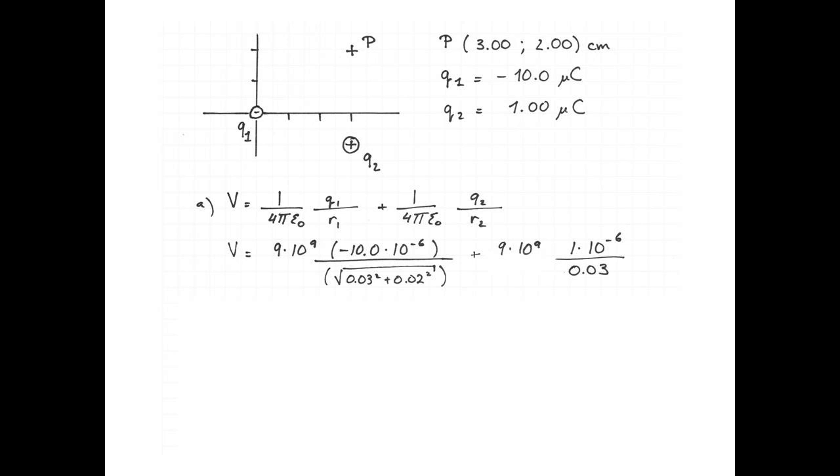1 over 4 pi epsilon naught is 9 times 10 to the 9. Q1 is negative 10 microcoulombs. And the distance from point P is going to be calculated with the square root of 0.03 squared plus 0.02 squared. That's the Pythagorean theorem.